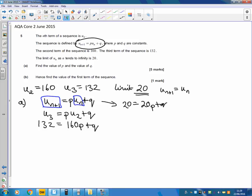Now we've got two equations, equation 1 and equation 2. We have simultaneous equations. If we subtract equation 2 from equation 1, we get 112 equals 140p, and the q's cancel out. Rearranging gives p equals 4/5 or 0.8.